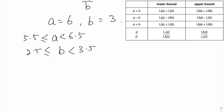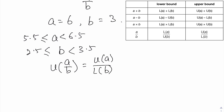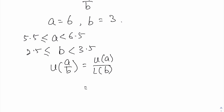In order to get the upper bound of a over b, you will need to use the upper bound of a divided by the lower bound of b. I will explain why later. But for now, let us substitute the values in: 6.5 divided by 2.5 gives 2.6. Now why do I want to divide by the lower bound of b?